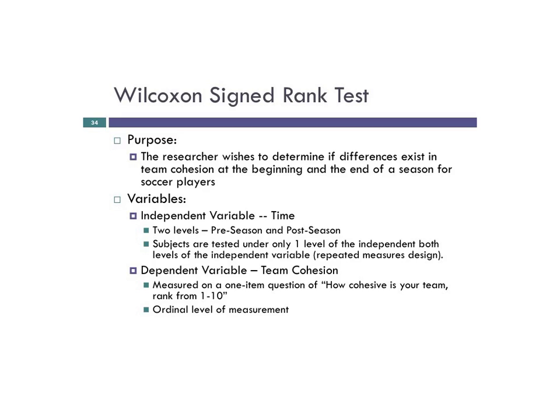The example we're going to work off of is: a researcher wishes to determine if differences exist in team cohesion at the beginning of the season and at the end of the season for soccer players. The independent variable is a pre-test/post-test situation — an independent variable of time — where the two levels, because this is still a variation of a t-test, will be pre-season and post-season.